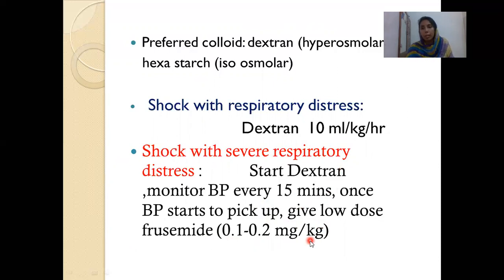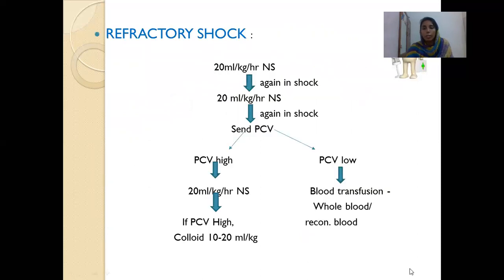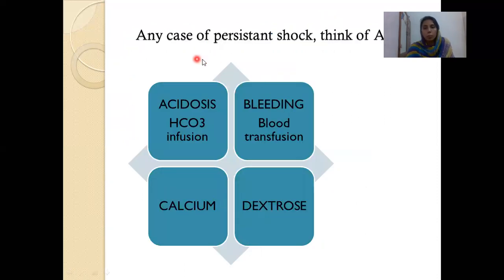After giving Dextran, expect hemoconcentration to come down — PCV should fall by more than 10. If the PCV fall is not more than 10, consider an occult bleed. If there is an occult bleed with low PCV, consider blood transfusion. Indications for blood transfusion: clinically severe bleed, refractory shock, worsening acidosis, unstable vitals with normal or low PCV, or recent PCV less than 20% with persistent shock. Give whole blood 10 mL per kg or packed cells 5 mL per kg, or reconstituted blood.